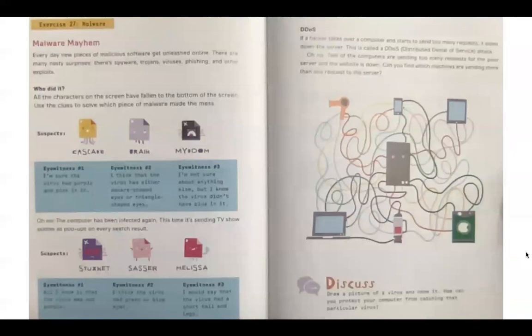Exercise 27. Malware mayhem. Every day new pieces of malicious software get unleashed online. There are many nasty surprises. There's spyware, trojans, viruses, phishing, and other exploits. Who did it? All the characters on the screen have fallen to the bottom of the screen. Use the clues to solve which piece of malware made the mess.